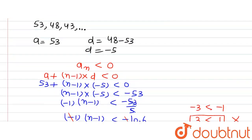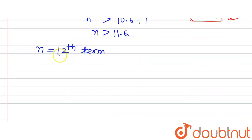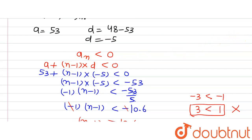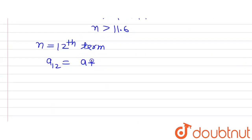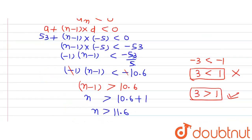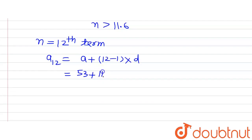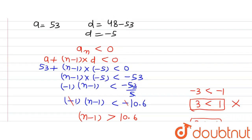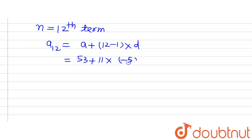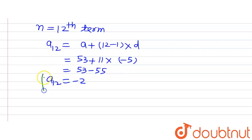Now let us find the 12th term, since we are asked which term is negative. Using the nth term formula, the 12th term A₁₂ equals A plus (12 minus 1) multiplied by D, which is 53 plus 11 multiplied by minus 5. That gives us 53 minus 55, which equals minus 2. So the 12th term is minus 2, which is less than 0 and is therefore negative.